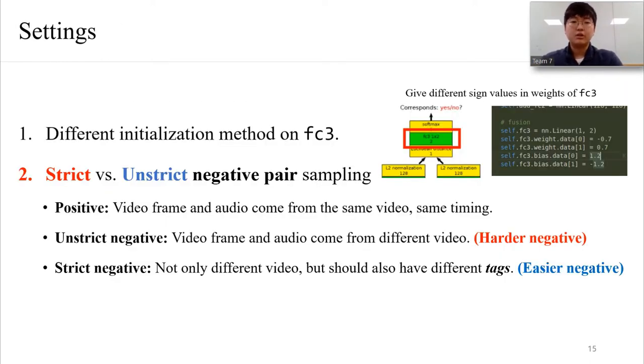There are other two settings for training the model. The first is applying different initialization method on the last fully connected layer as I mentioned before. As the last FC layer has only two parameters, which is very tiny compared to other layers, by assigning different sign values between each parameter, the model does not fail to be trained and converges faster.